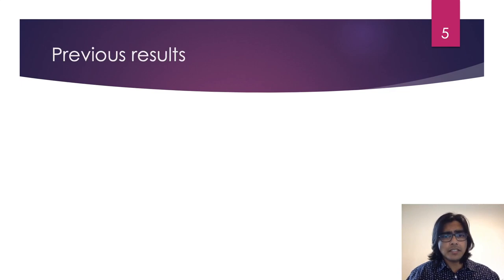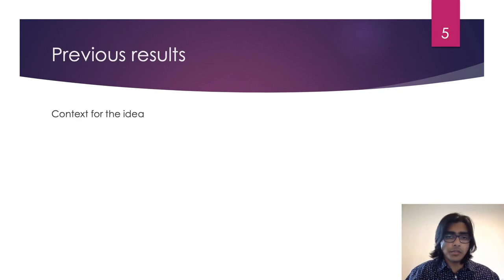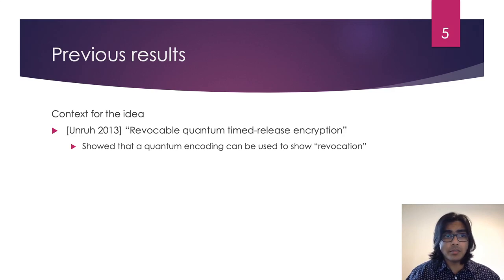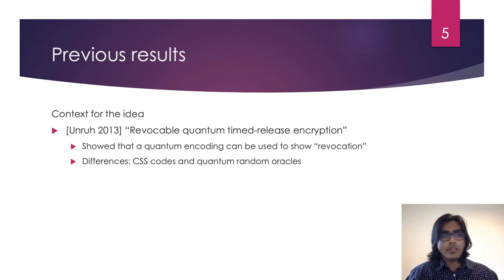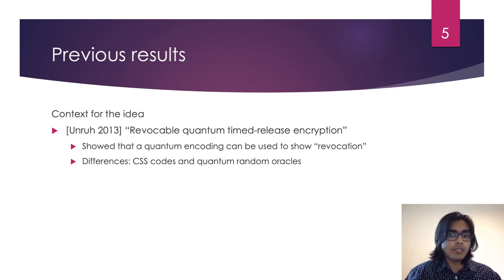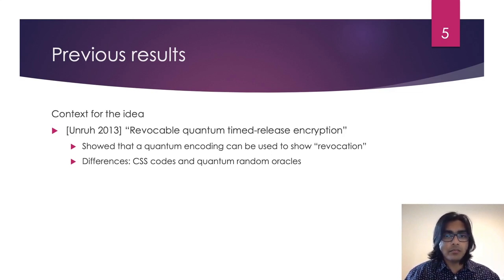The idea of certified deletion that we're presenting here is not brand new in our paper, and it does have some precedent in the previous literature. Unruh, for example, showed that a quantum encoding can be used as a means to show that a ciphertext has been revoked in the context of timed release encryption. The revocation process he discusses, however, is fully quantum, while the deletion process we describe is classical. There are also clear technical differences in the proof: he uses techniques related to CSS codes and quantum random oracles, whereas we use privacy amplification and uncertainty relations, and our work is not in the quantum random oracle model. Moreover, our work is outside the context of timed release encryption.